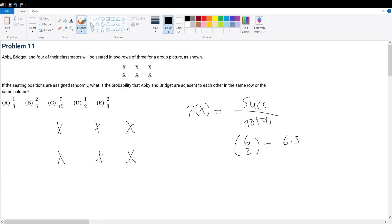So 6-pick-2 is the total possible combinations. That's 6 times 5 divided by 2, which gives 15. There are a total of 15 ways to seat two people within the six positions.